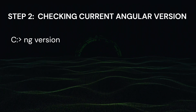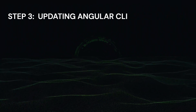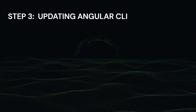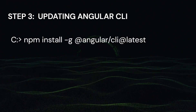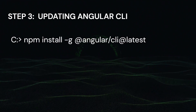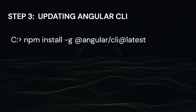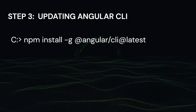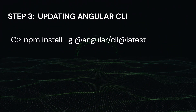The third step is updating the Angular CLI. Now let's update the Angular CLI to the latest version. For this we use the command: npm install -g @angular/cli@latest. This command installs the latest version of Angular CLI globally on your machine.